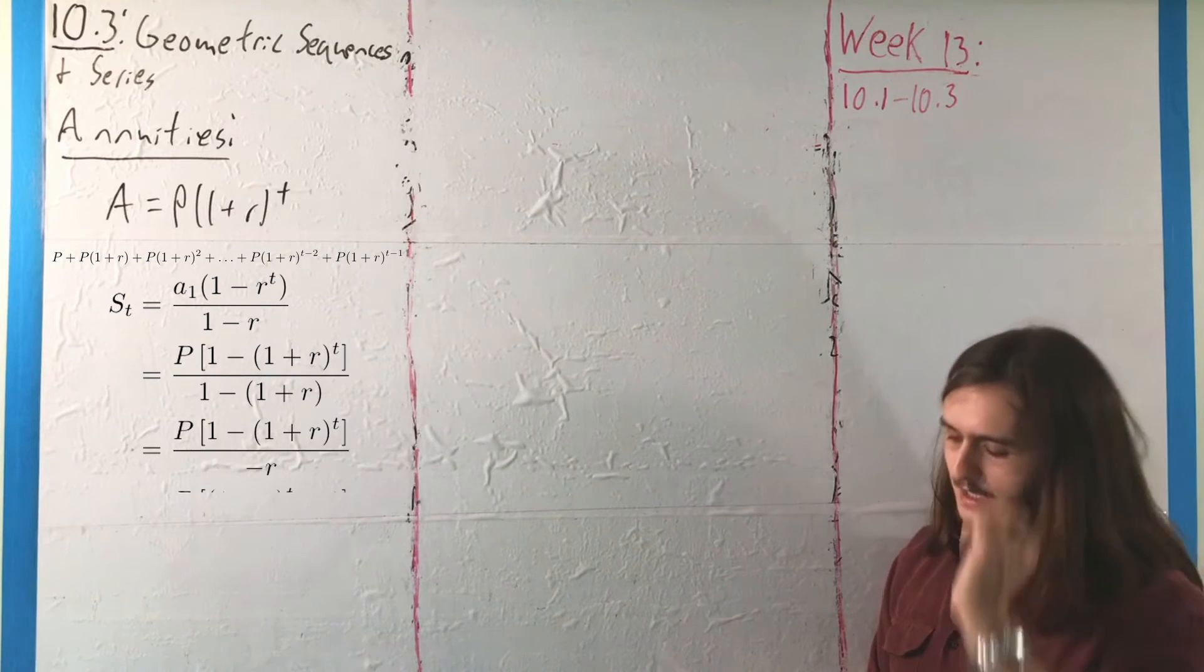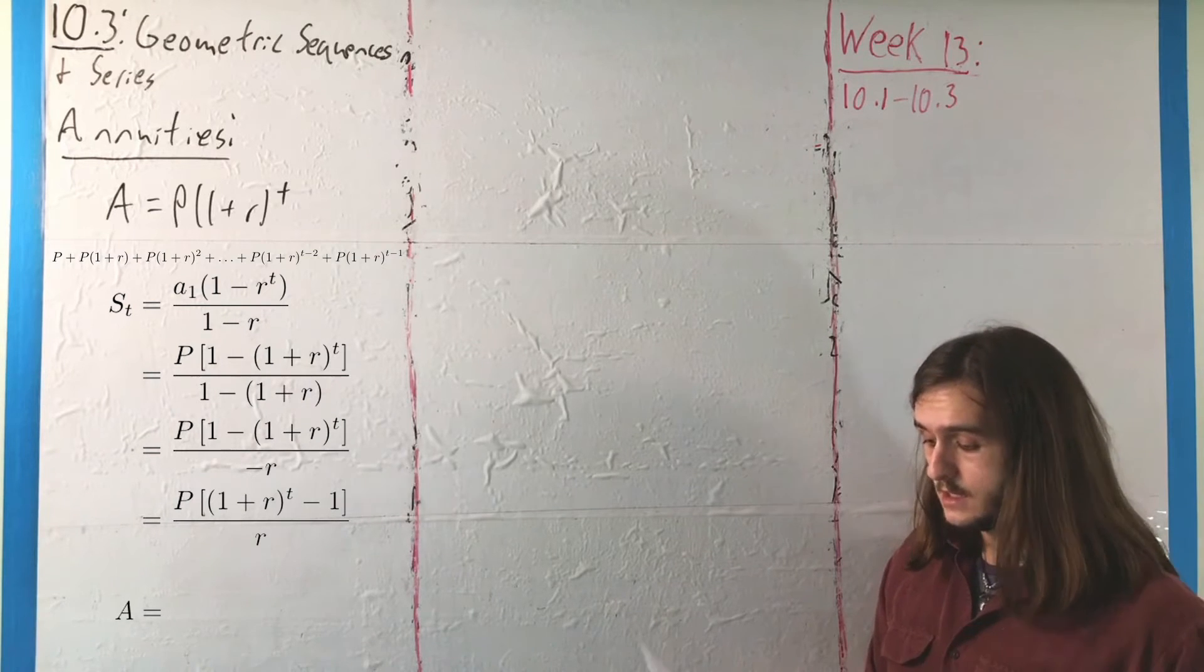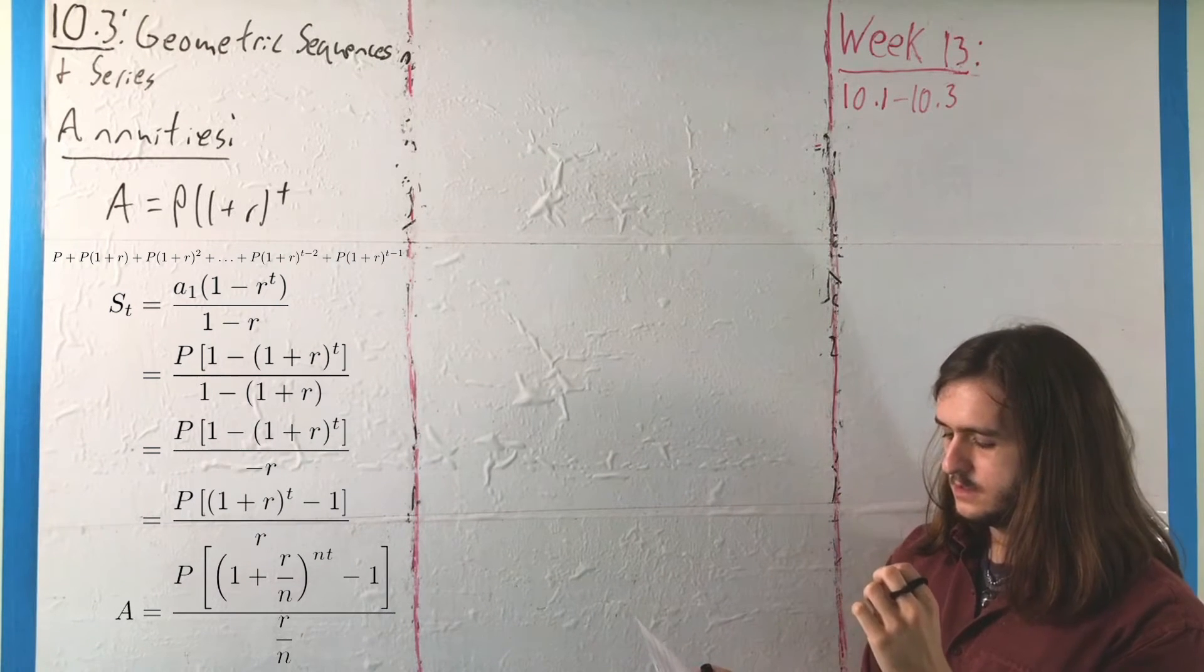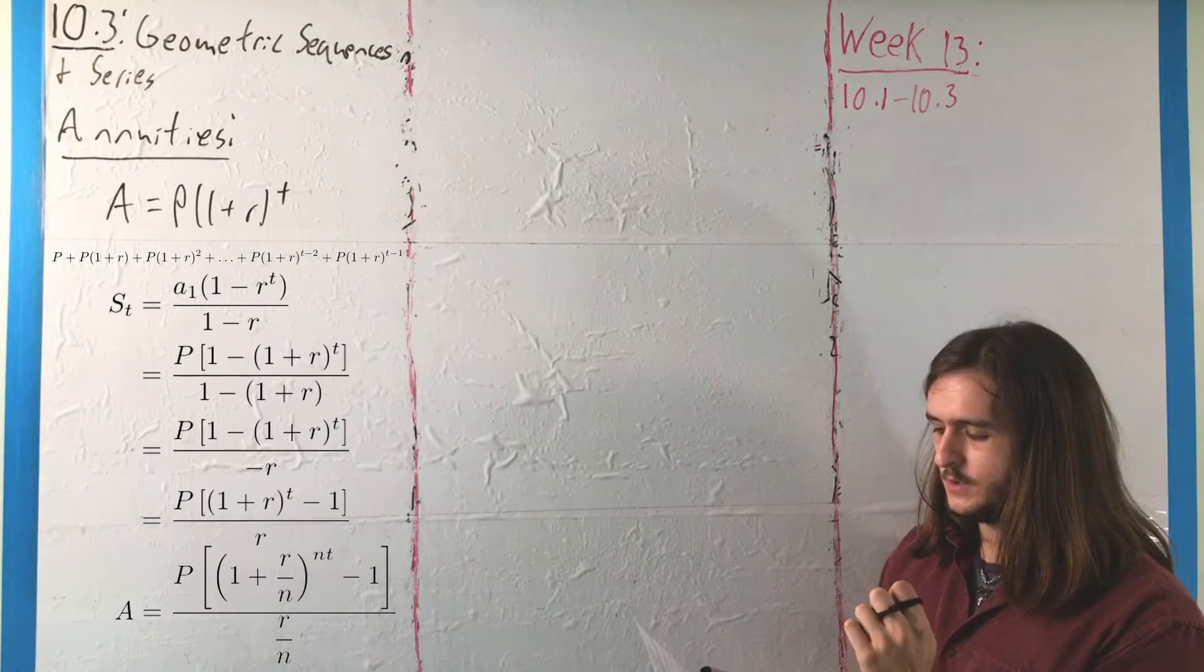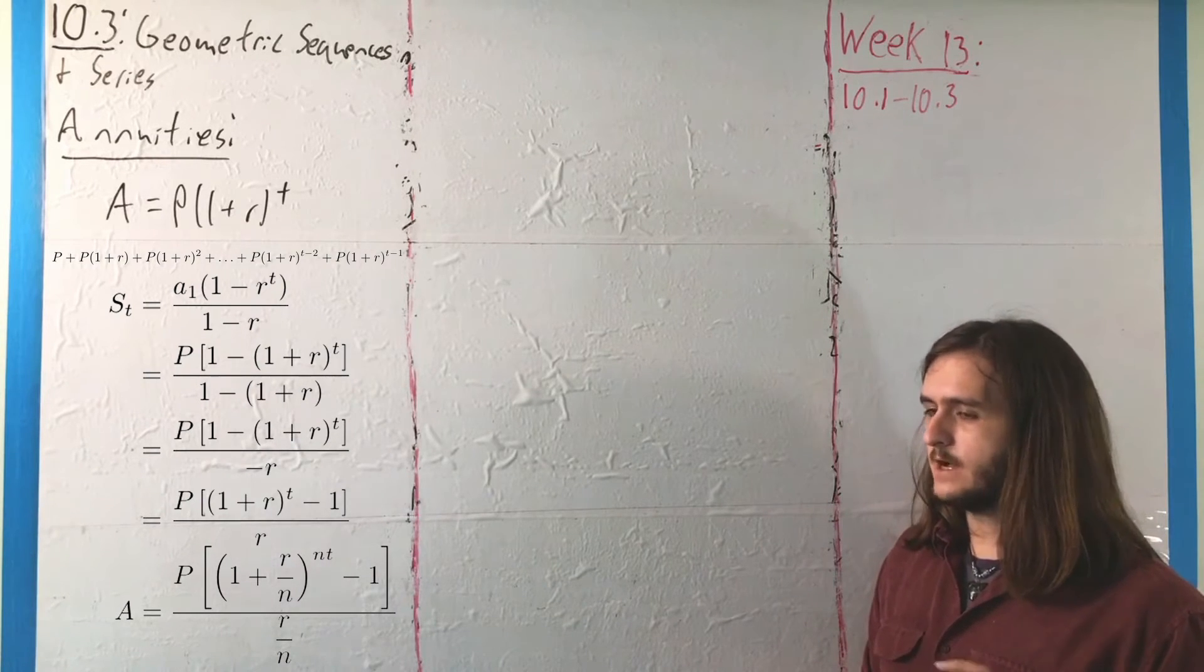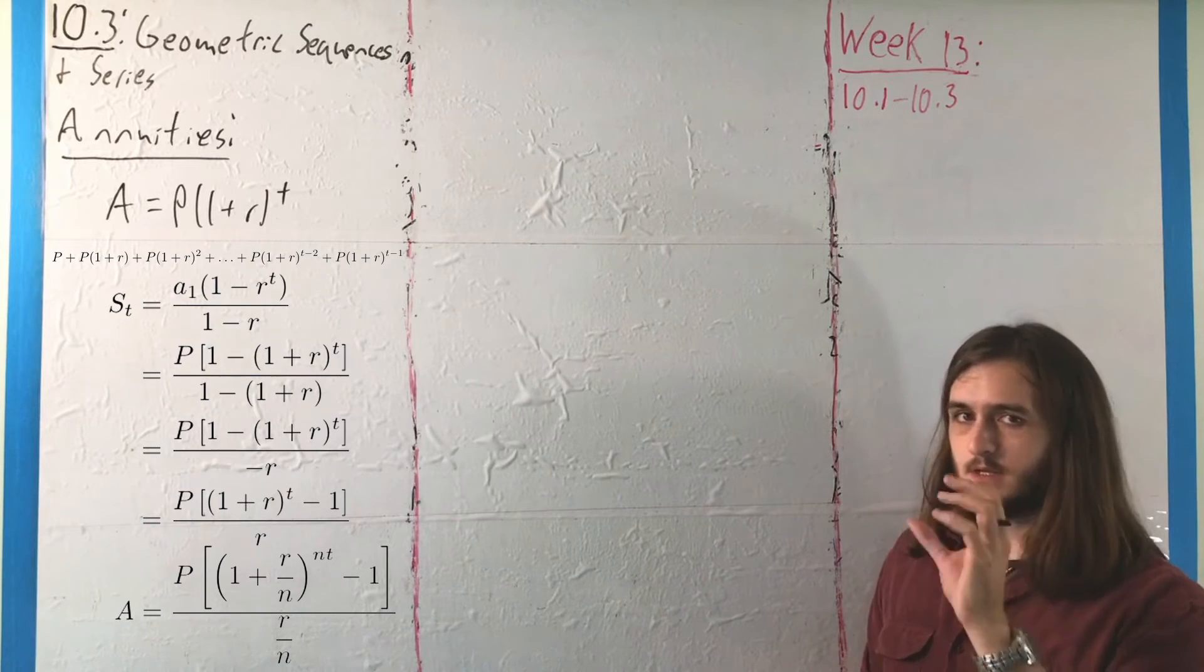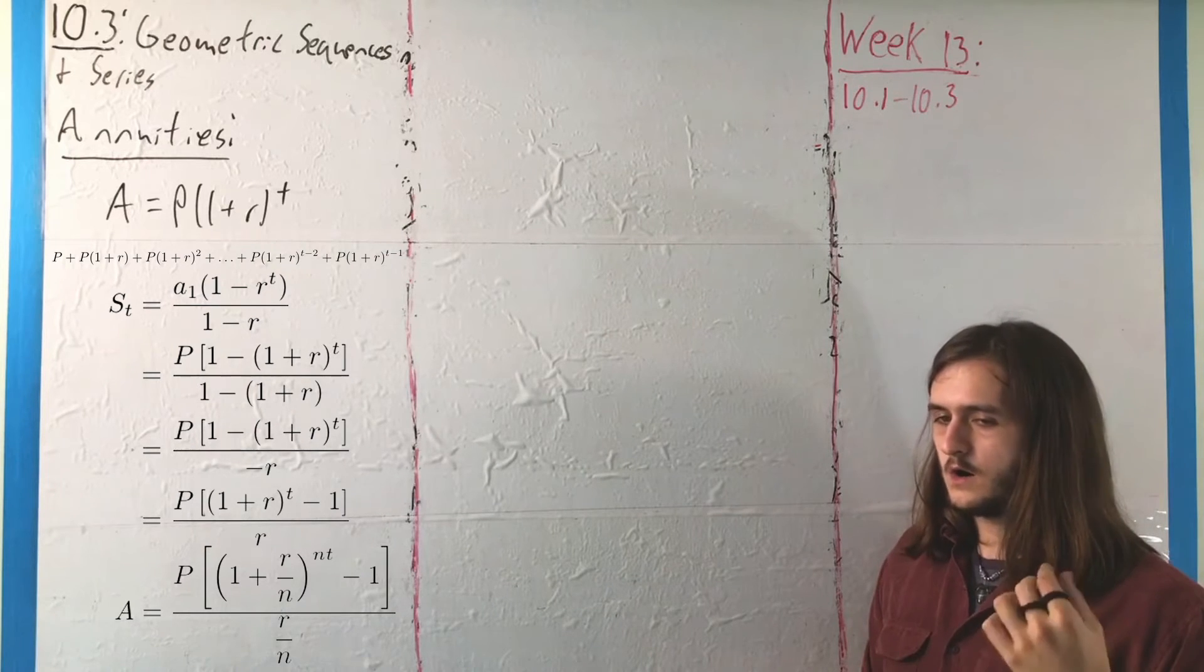Simplify that down a little bit, cancel out a negative, and you'll end up getting that the total amount, which we're going to now call A, is equal to P times the quantity 1 plus R over N, where we are using that value N to generalize that we're looking at a value that compounds not just once per year, but N times per year, raised to the power NT, the number of years times the number of compounding periods in a year, minus 1 over R over N.